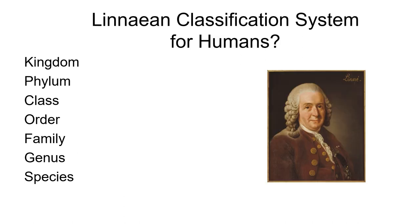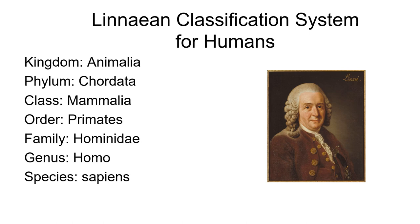So how can we do this for humans? Hopefully you know what kingdom we're in — we're in the kingdom Animalia, we're animals. We're in the phylum Chordata, which includes all of the vertebrates as well as several other kinds of organisms that share some characteristics in common. We're in the class Mammalia — we have hair and we have mammary glands. We're in the order Primates; apes and monkeys are in the order Primates. We're in the family Hominidae — today we're the only member of the family Hominidae; there were some extinct members of our group but we're the only one left. We're in the genus Homo and we're in the species sapiens.